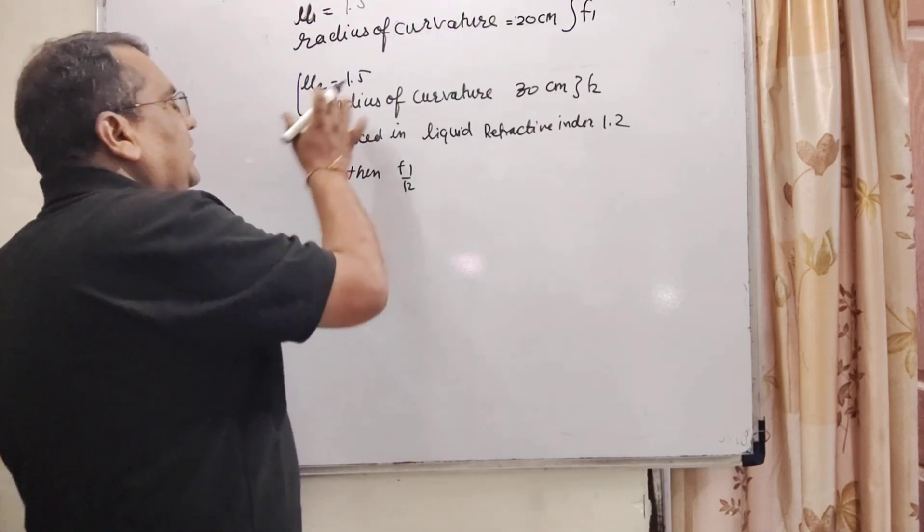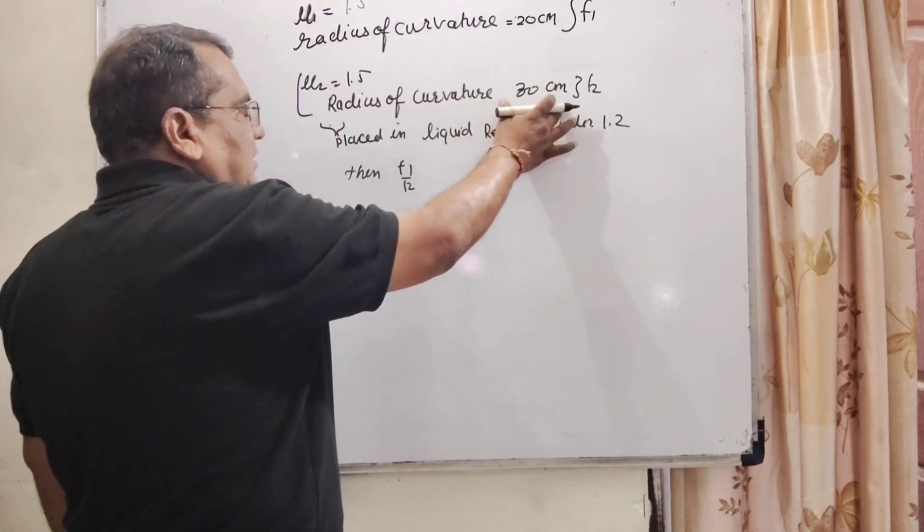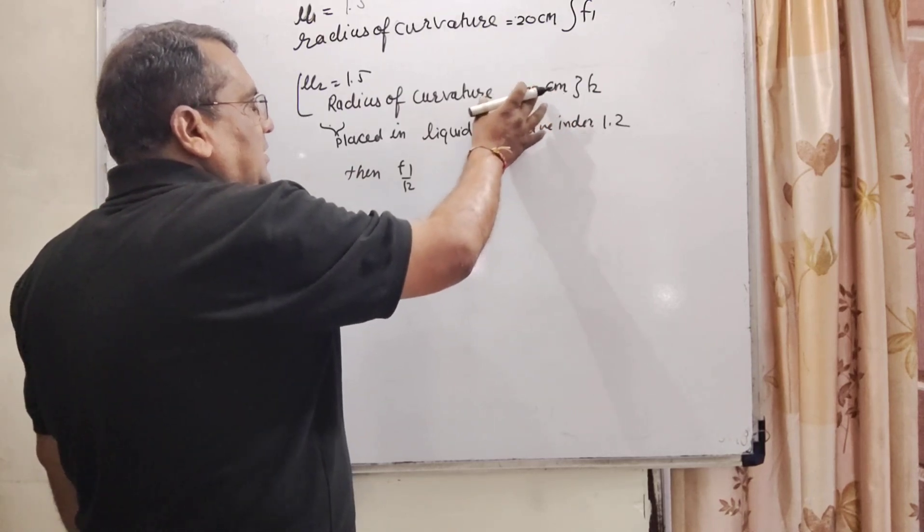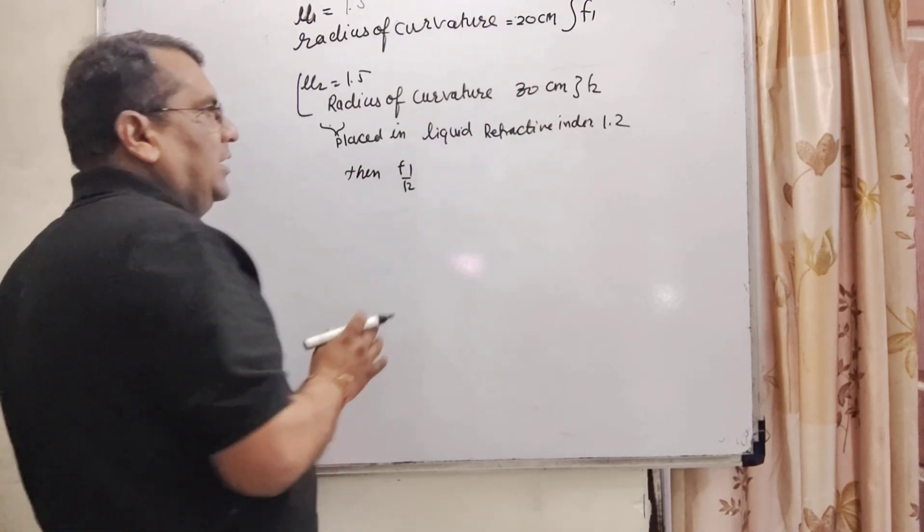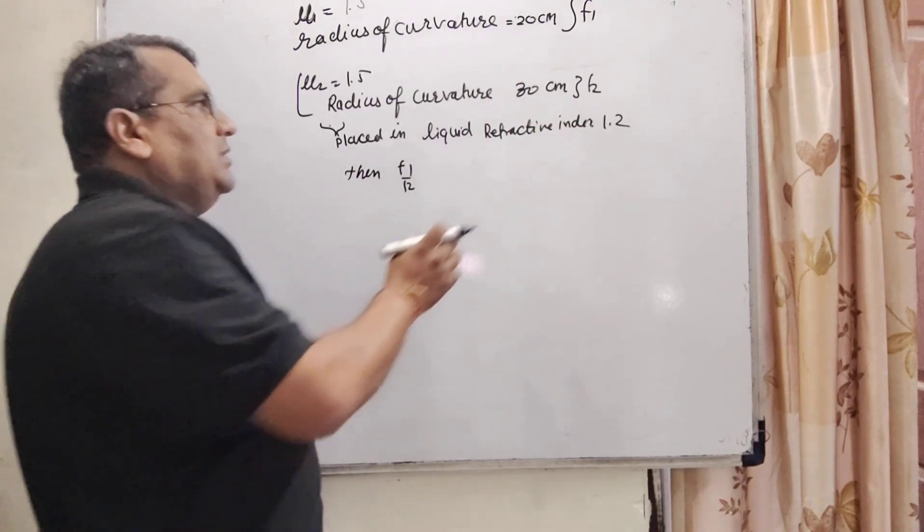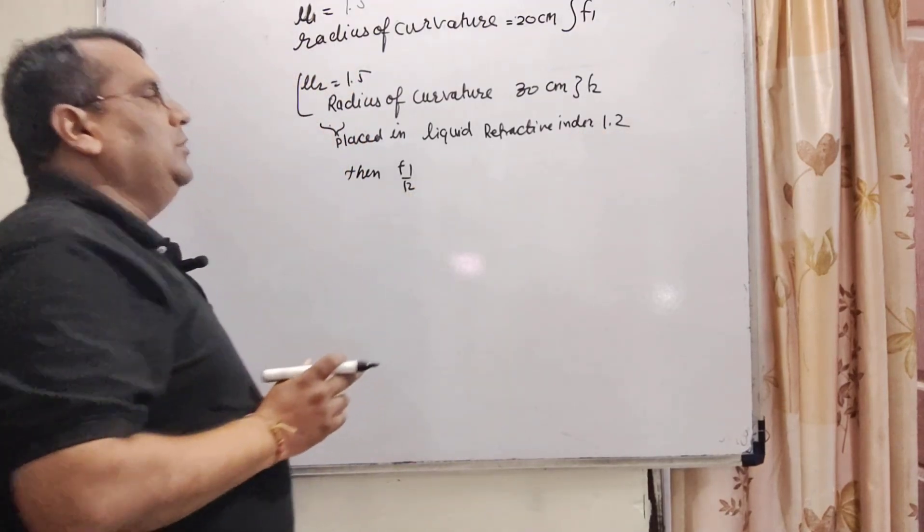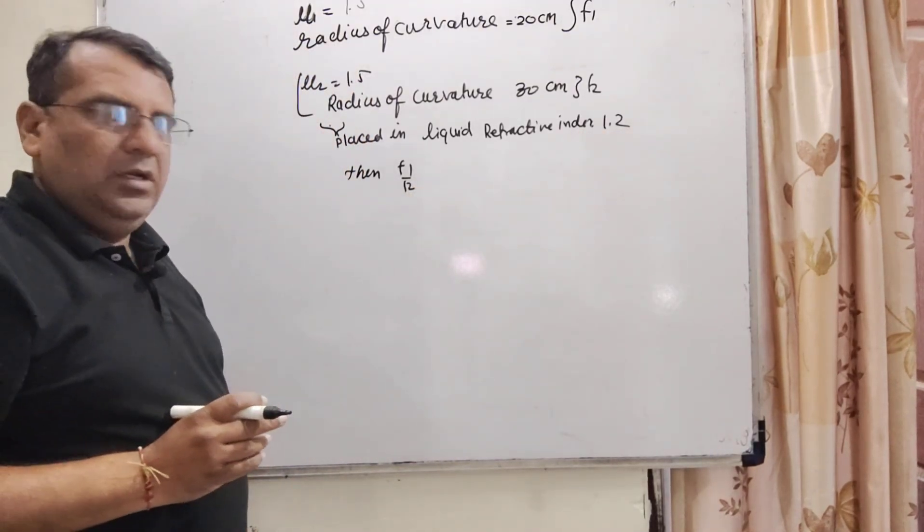And for the second lens that is the same plano convex lens which having the refractive index 1.5, radius of curvature 30 cm. And this lens immersed in the liquid which having the refractive index 1.2 and we have to find out f1 by f2.